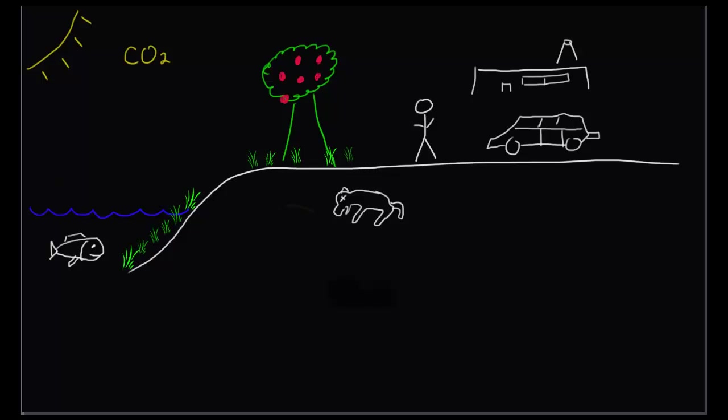This is an attempt to explain carbon cycle. Carbon is an element found all throughout the earth and is found in all living matter, all organisms.